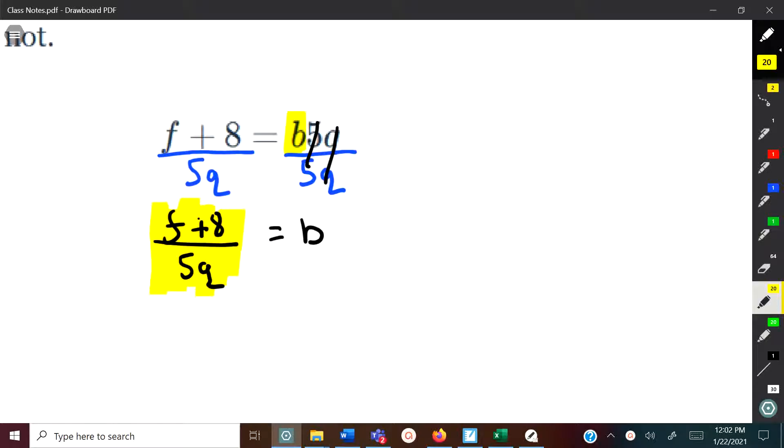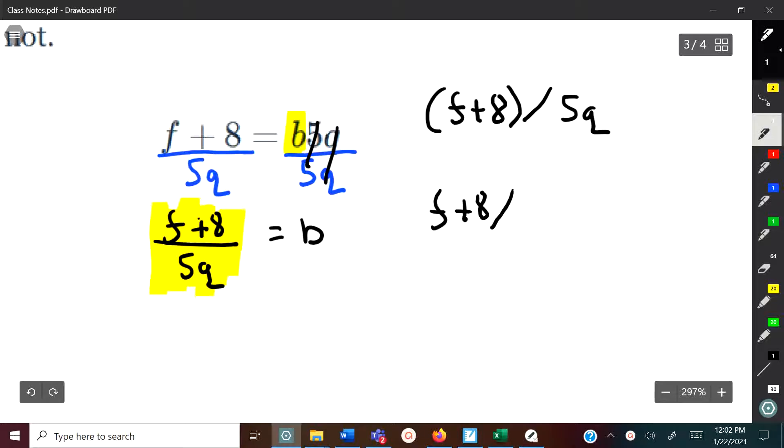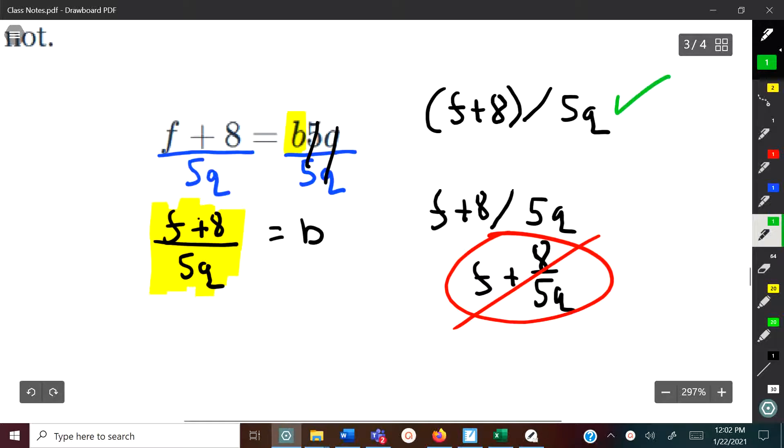Now when you type this in, you want to put f plus 8 in parentheses, then hit divide, and then 5q. That way it'll look like this. But if you don't do that and you have f plus 8 divided by 5q without parentheses, what happens is the f will be by itself and that's not what you want. So make sure you put it in parentheses.